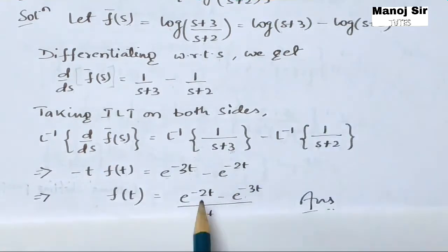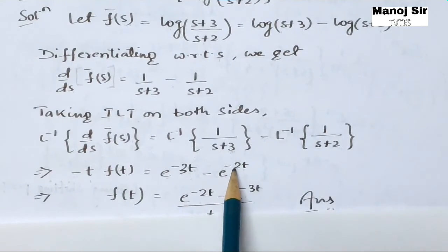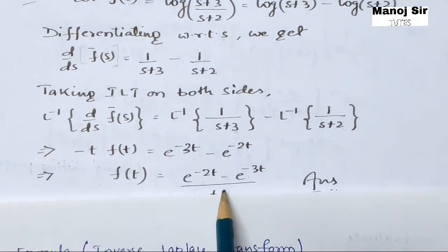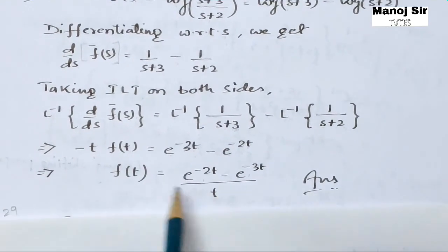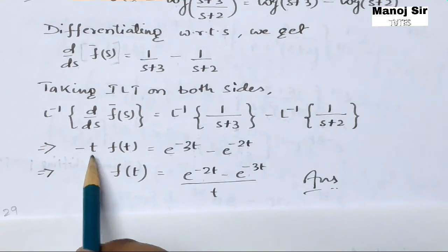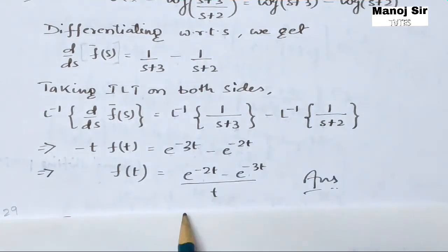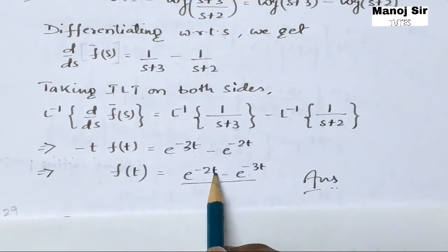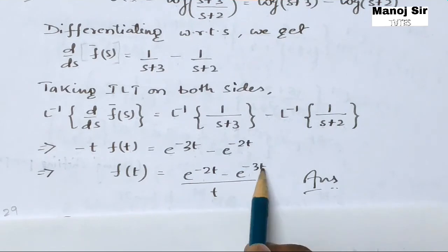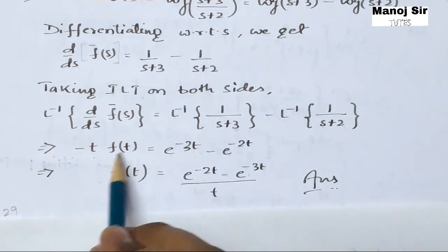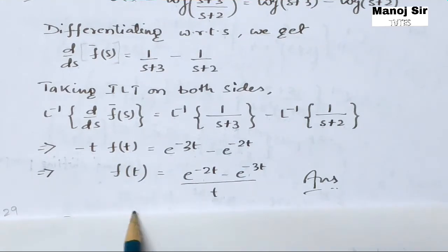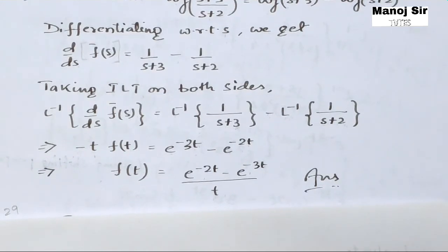Taking the negative sign to the right-hand side and t to the right-hand side, we get f(t) = (e^(−2t) − e^(−3t)) / t. This is the final answer. Thank you so much for watching this video.